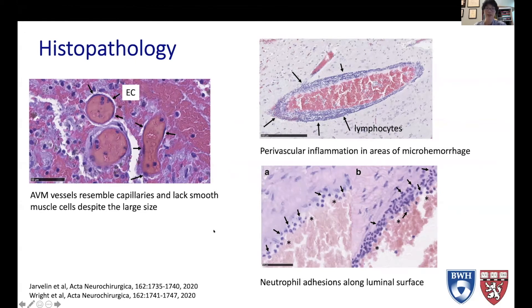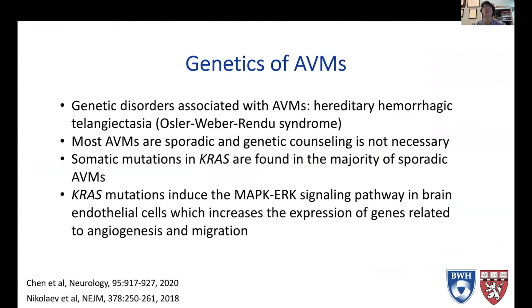That's the histopathology. Now, what do we know about the pathogenesis of AVMs? AVMs are thought to be congenital — you're born with them for the most part. They are found in children, even in babies. There are genetic disorders associated with AVMs, one of which is hereditary hemorrhagic telangiectasia, or Osler-Weber-Randu syndrome.